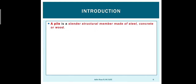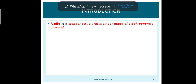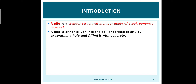Pile foundation introduction. A pile is a long, slender, structural, vertical member made up of steel, concrete, or wood. Any material can be used. In olden days they used wood, then came steel, and nowadays we put concrete inside for making the pile.